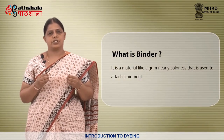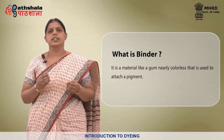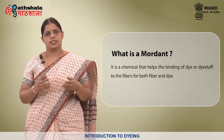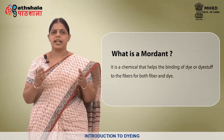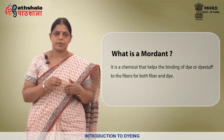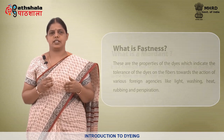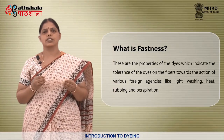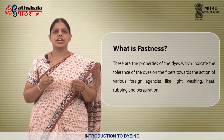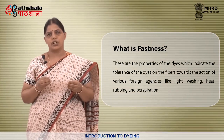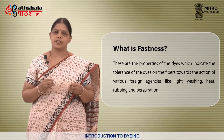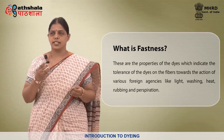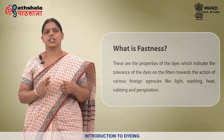What is a binder? It is a material like a gum, nearly colorless, that is used to attach a pigment. What is a mordant? It is a chemical that helps the binding of dye or dyestuff to the fibers for both fiber and dye. What is fastness? These are the properties of the dyes which indicate the tolerance of the dyes on the fibers towards the action of various foreign agencies like light, washing, heat, rubbing and perspiration. That means the dyed or printed fabric — for example, garment, curtains, fabrics — should not fade or change its color.